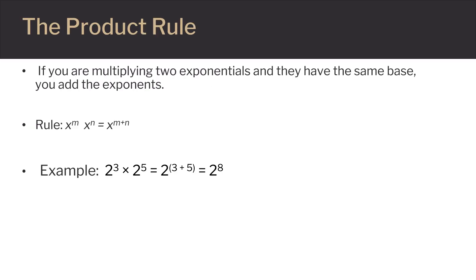We'll start with the product rule. If you multiply two exponents with the same base, you add their exponents. x to the m times x to the n equals x to the m plus n. Here's an example: two to the third power times two to the fifth power. Two is the base, so we can add the exponents and get two to the three plus five, or eighth power.